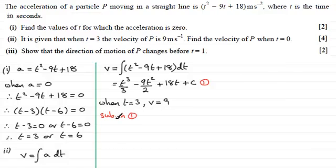And if we do that, we've got for v, it's going to be 9. So therefore, 9 equals 3 cubed over 3 minus 9 times 3 squared over 2 plus 18 times 3 and then plus the constant of integration c. And if we work this out, we've got 9 equals 22.5 plus c.